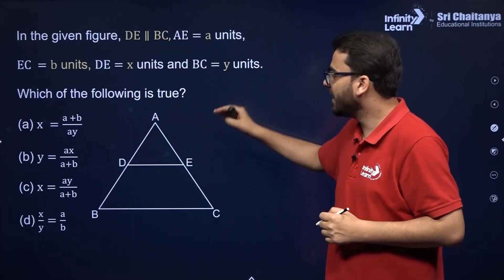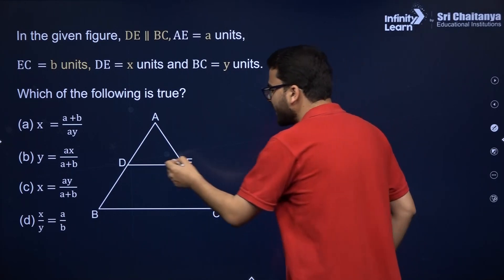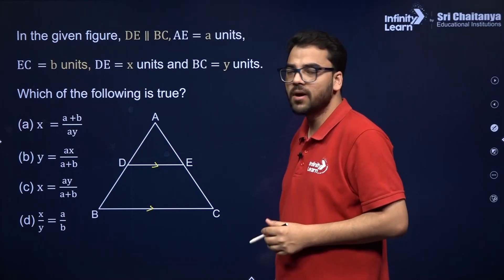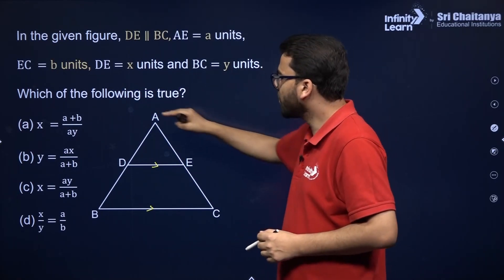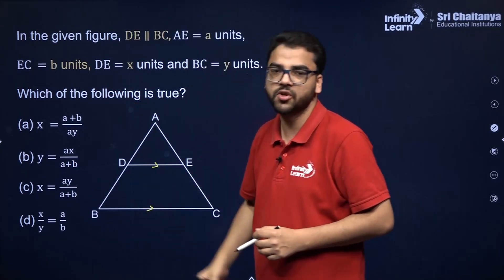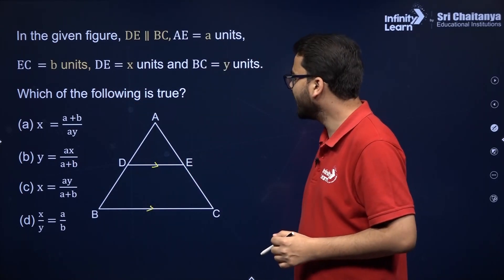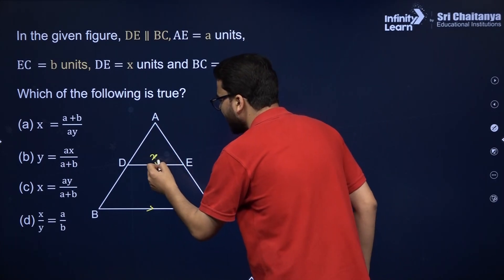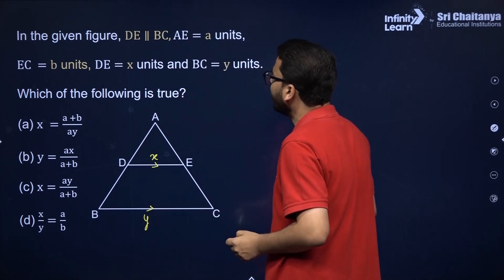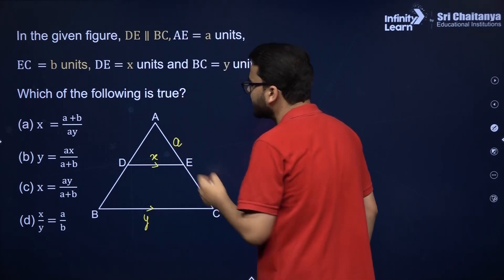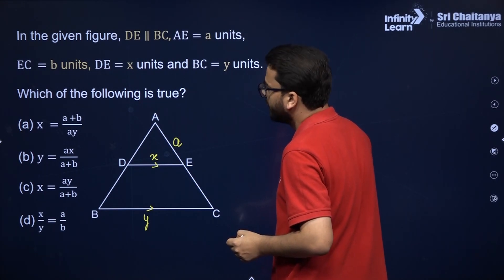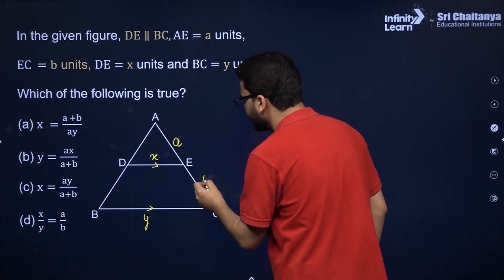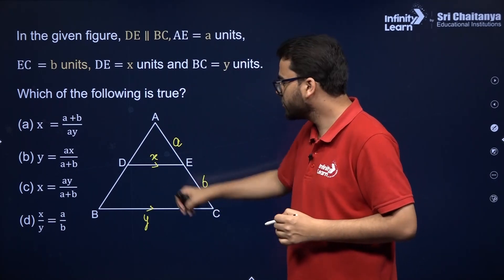It is given in the figure that DE is parallel to BC. AE is equal to A units, EC is equal to B units, DE is equal to X, and BC is equal to Y. We need to choose from the given options.